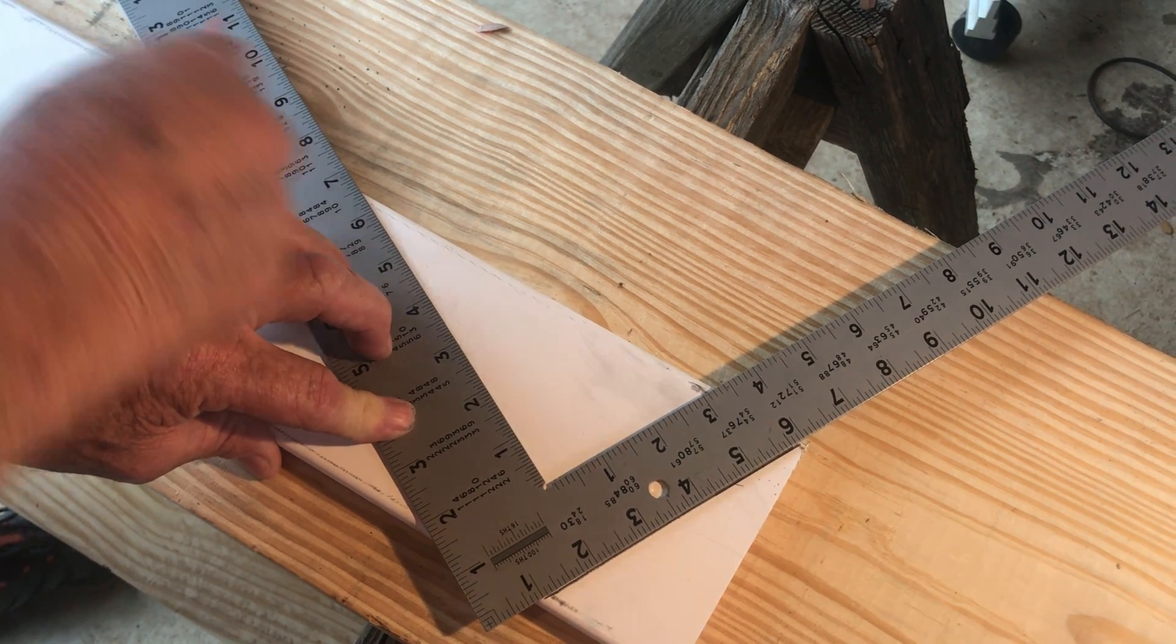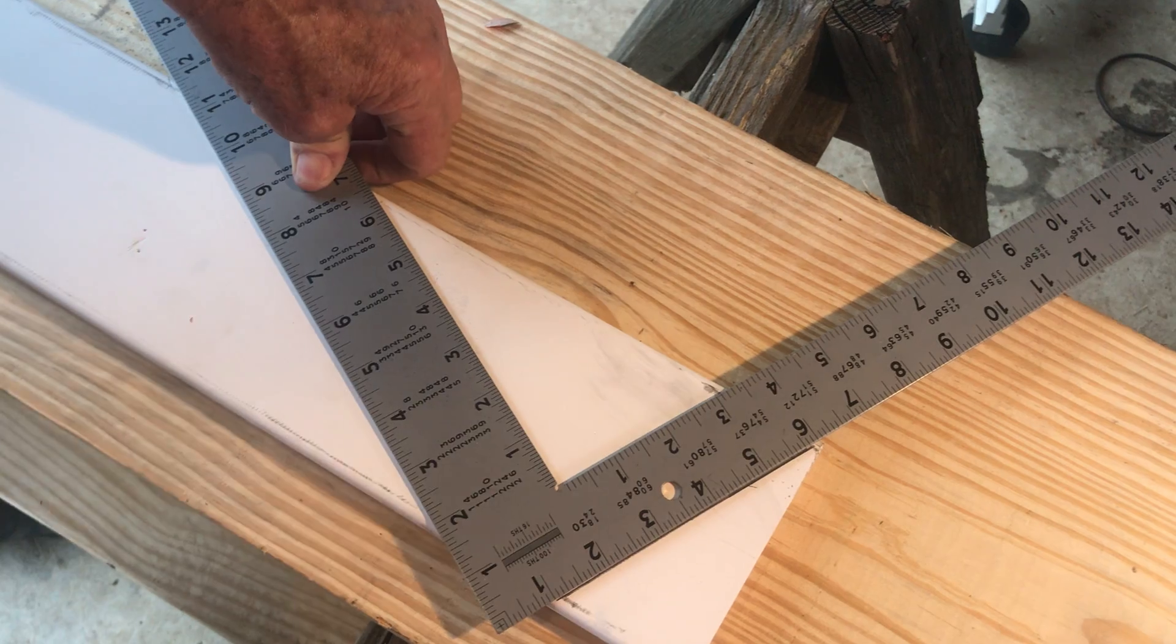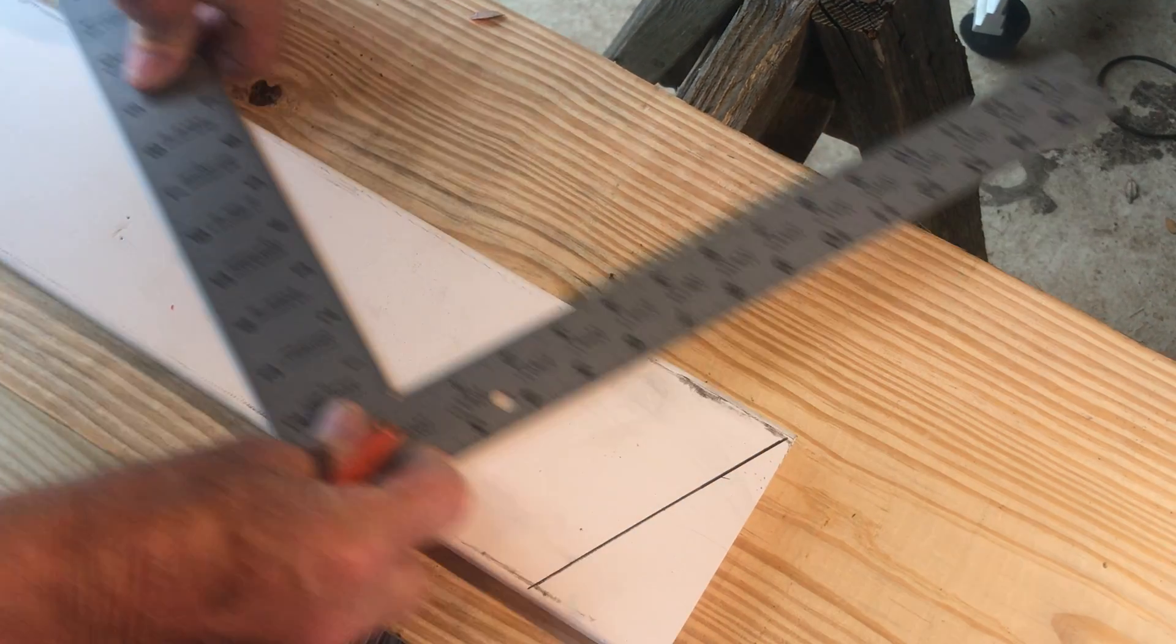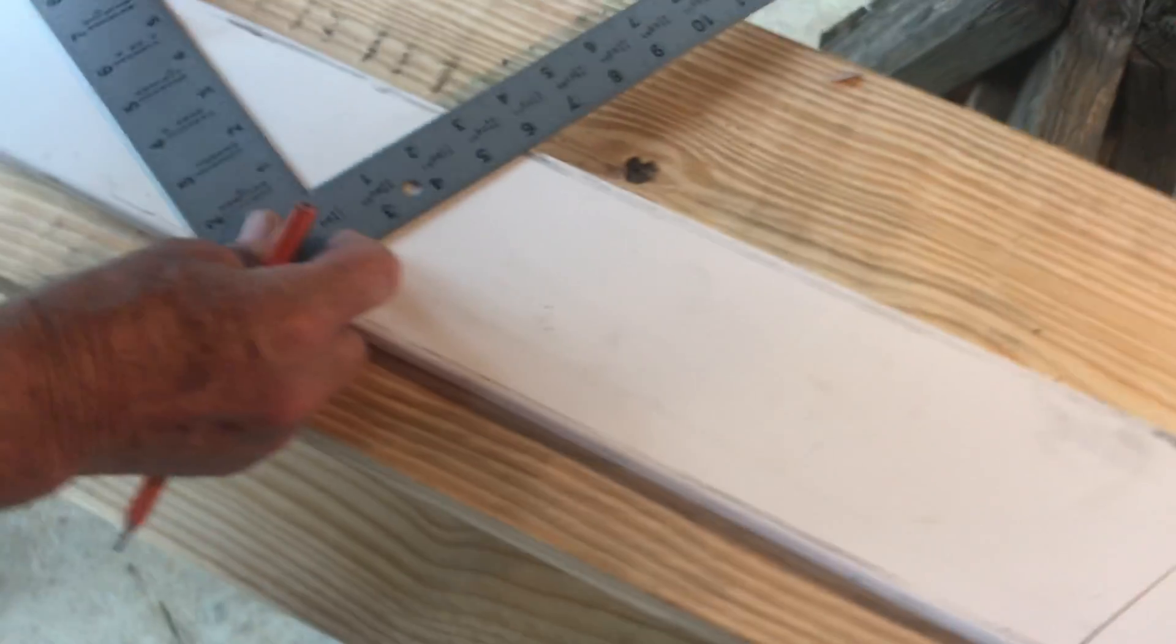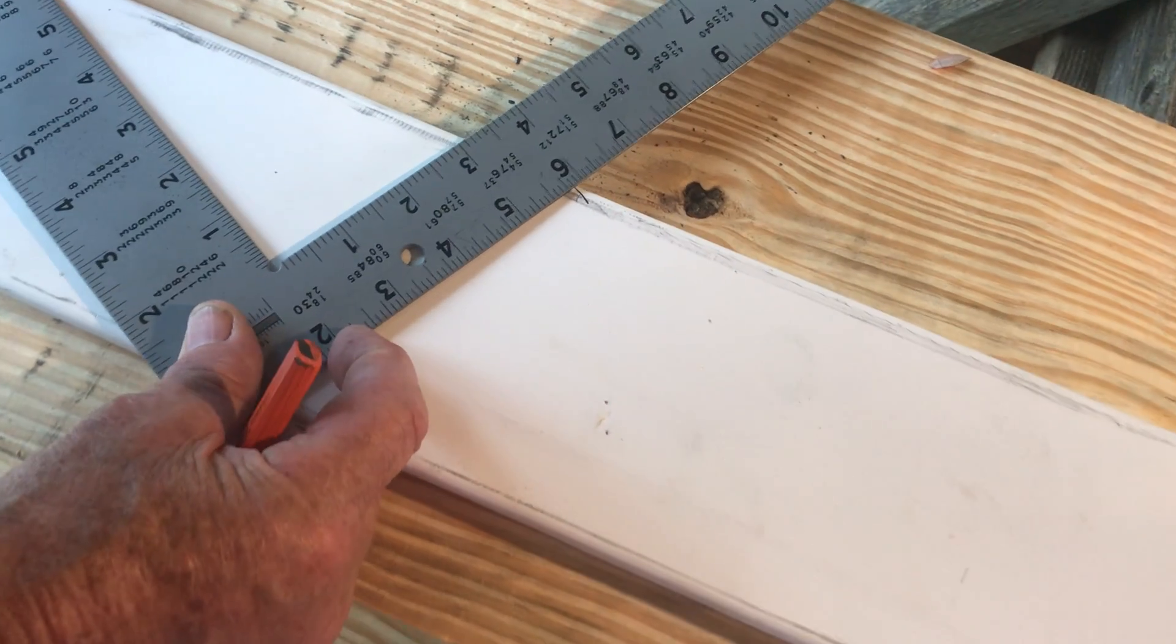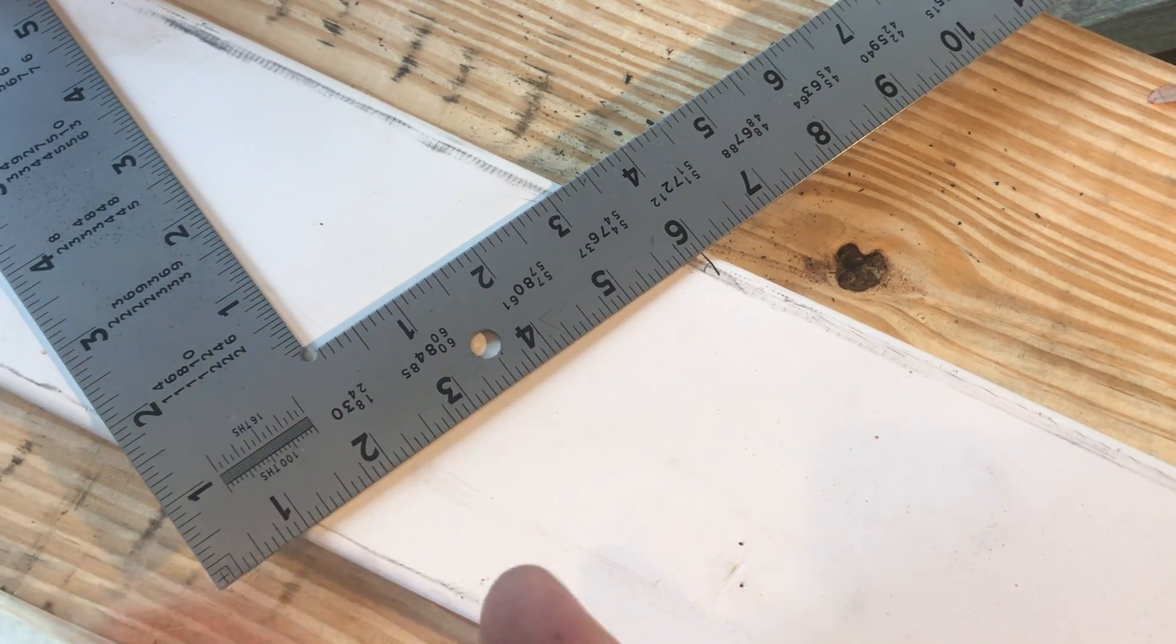And I'm going to see where 12 is. This is 12 inches of run. I need to do this 4 times. So I slide my square down, and I hold the same dimension.